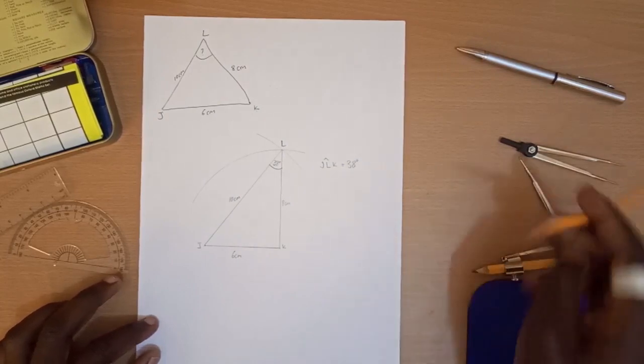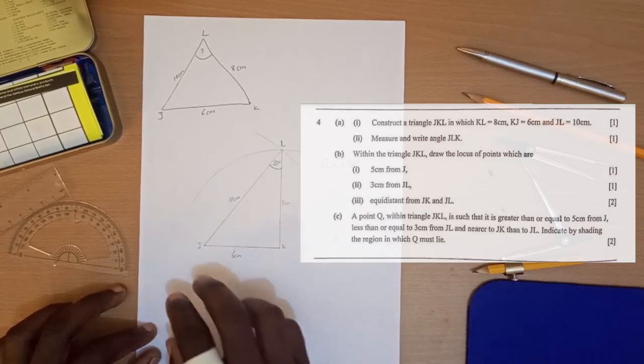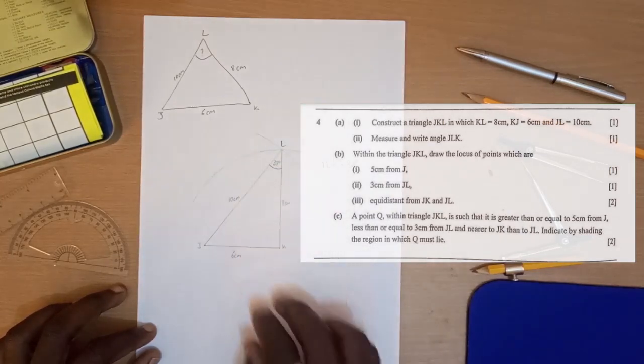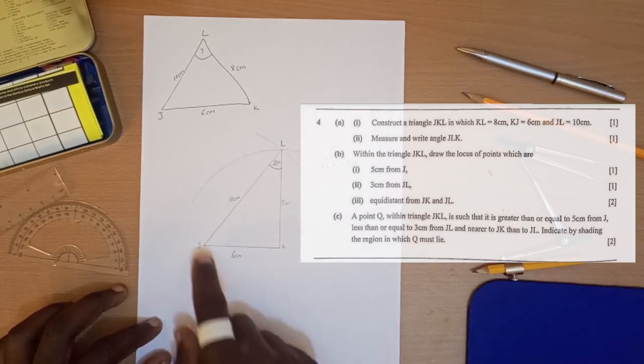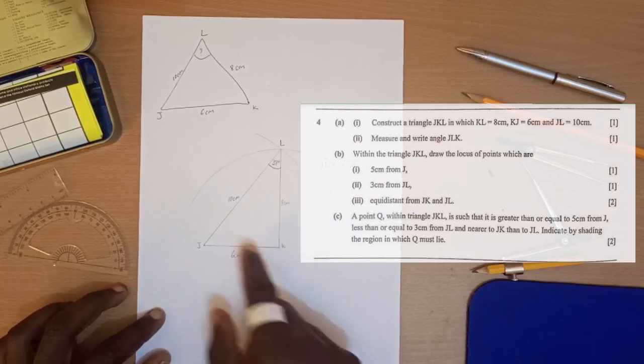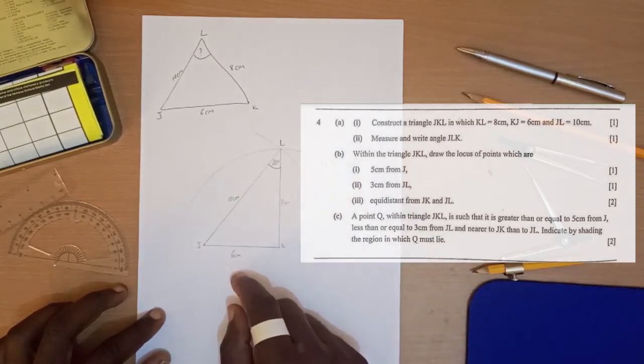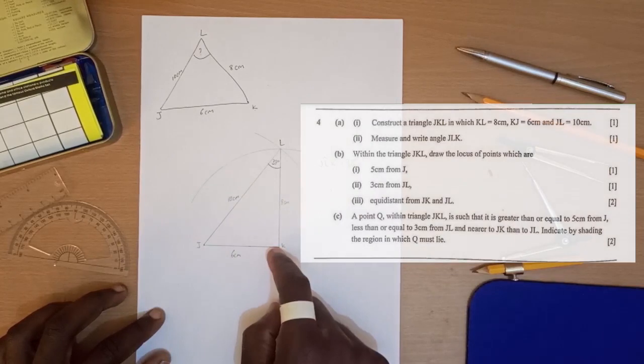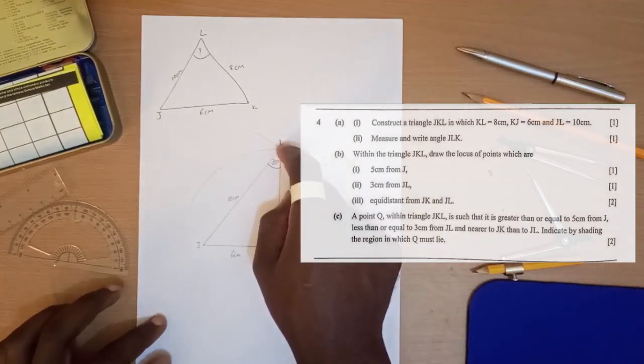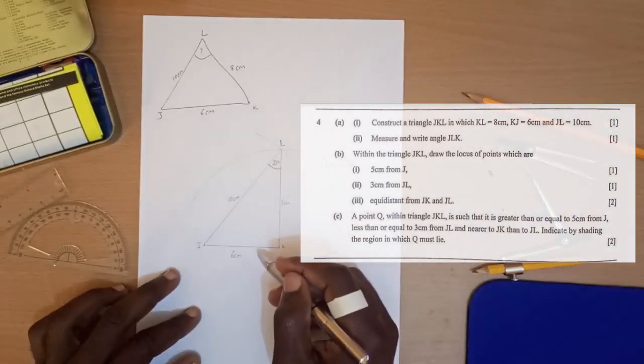The second part of the question, which is B, says: Within the triangle JKL, draw the locus of points which are 5 centimeters from J, 3 centimeters from JL, and equidistance from JK and JL.